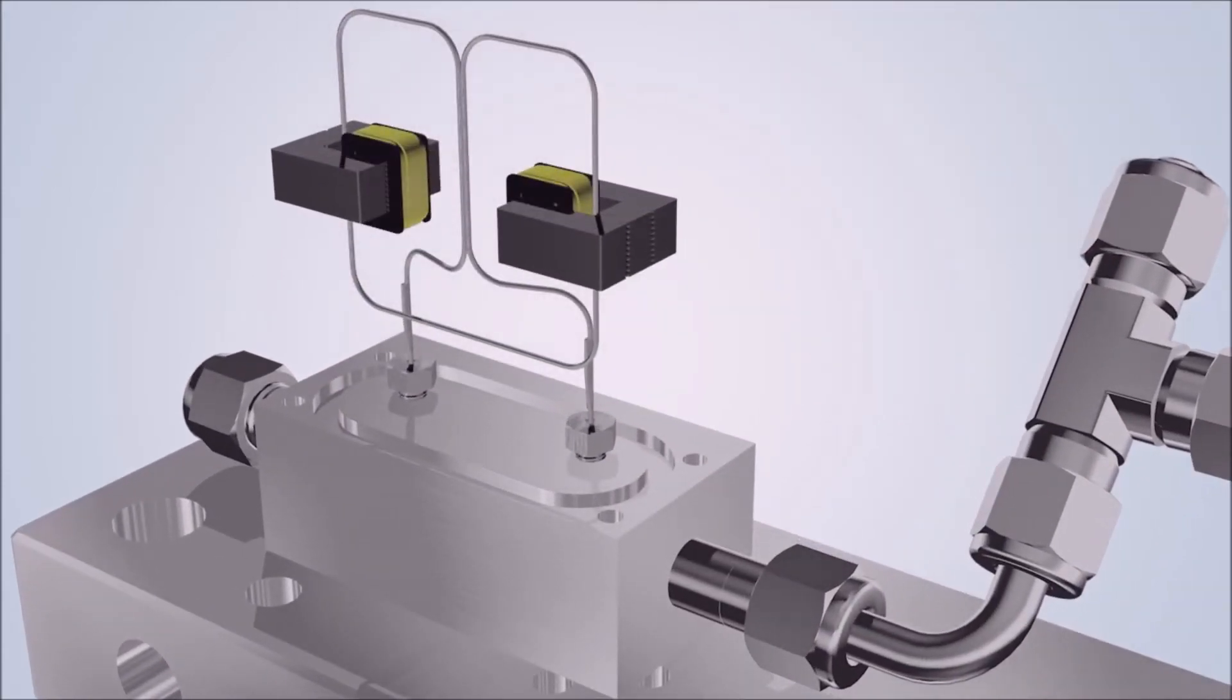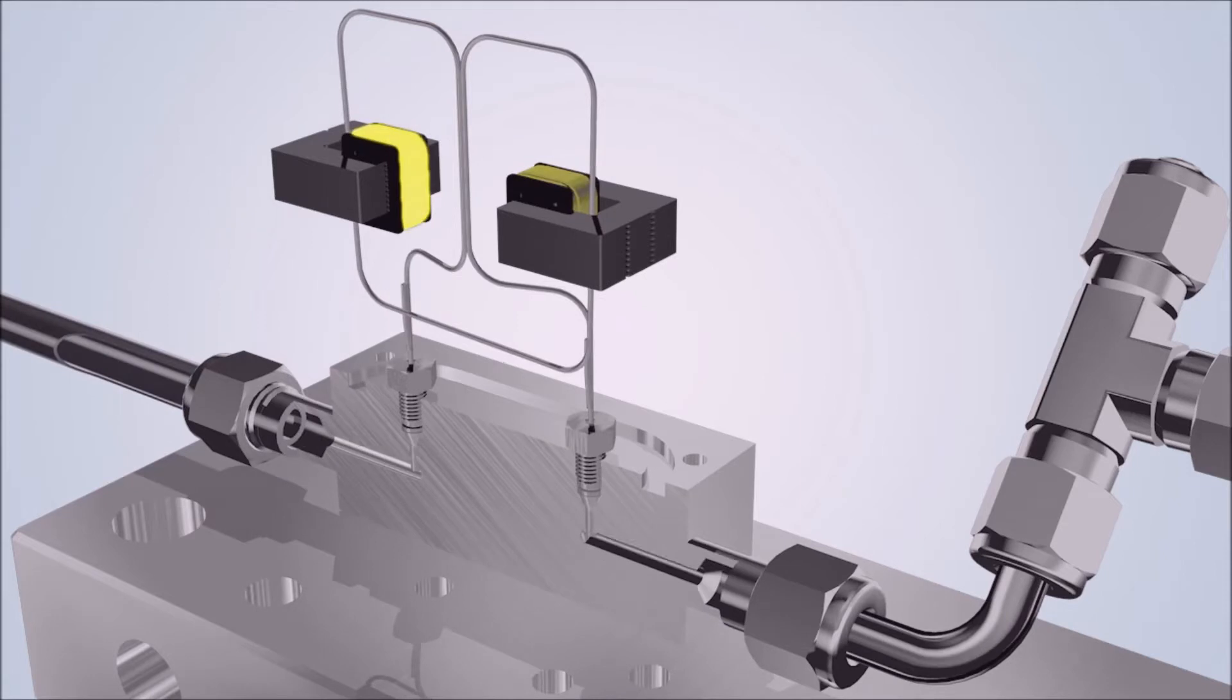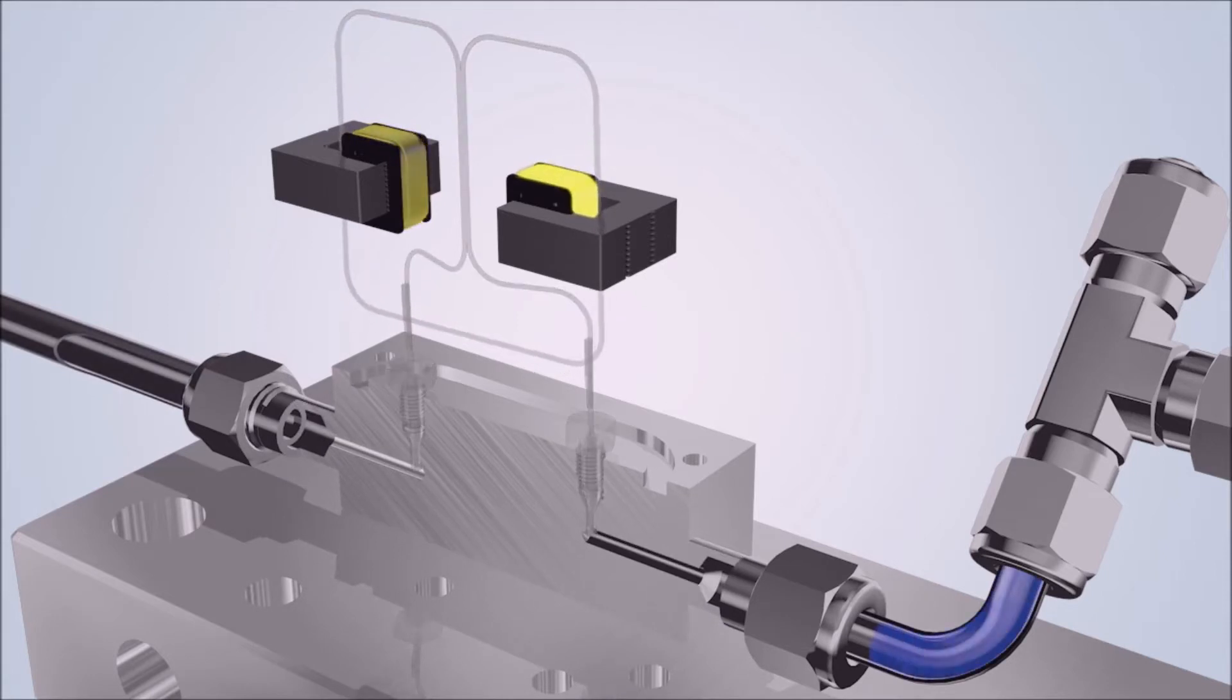Once the power source is connected, the sensor tube immediately begins to vibrate. This vibration, which has been slowed down considerably in the video, is generated by energizing two actuators alternately, thereby creating a magnetic field.